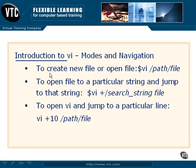Getting into VI is very simple. If a file already exists, you simply type VI and the file name, including the path if it's not in your current directory. If that file doesn't exist, VI will create it for you. You can also jump to particular locations, such as the first instance of a string, by typing VI plus forward slash and the string, followed by the file name.